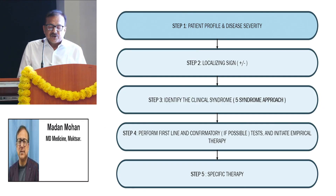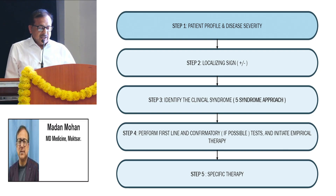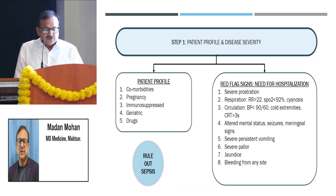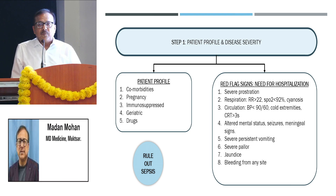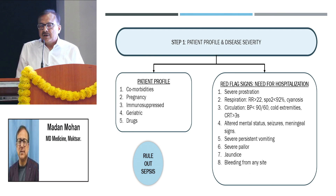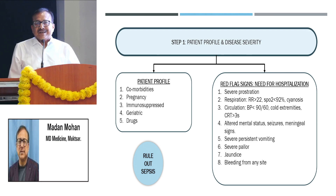The first step will be patient profile and to assess disease severity, then the localizing signs, then identifying the clinical syndrome, after that perform first line and confirmatory tests and initiate empirical therapy, and then after diagnosis is made, specific therapy. For patient profile and disease severity, we should see the geographical area from where the patient belongs, comorbidities like cardiovascular disease, diabetes, hypertension, history of drugs, and any immunosuppressive status. On presentation we should assess red flag signs to determine if the patient requires hospitalization or can be treated on OPD basis.